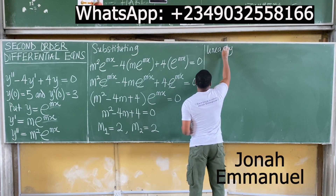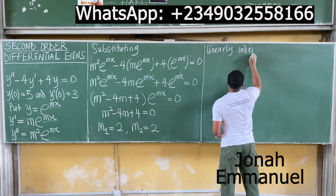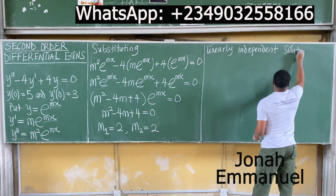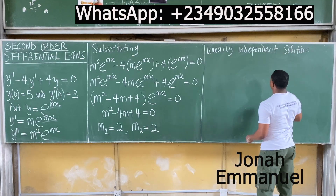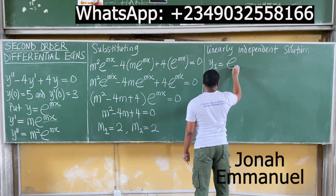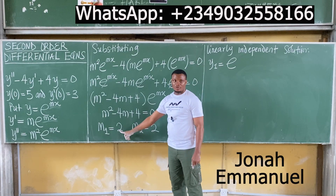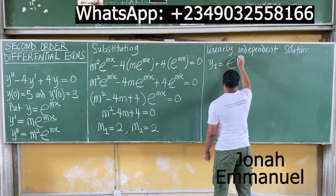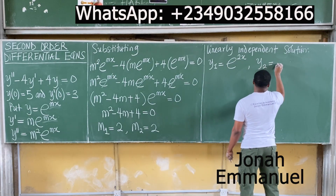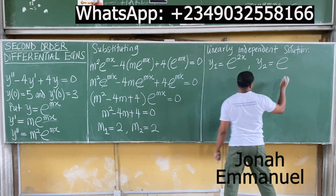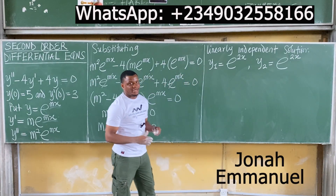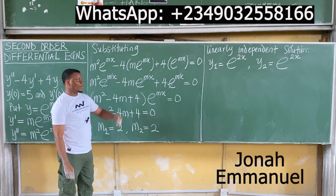Let's get the linearly independent solutions. The first solution is y1 equal to e^(m1·x), where m1 is 2, so y1 = e^(2x). And y2 = e^(m2·x), that's also e^(2x). This would always vary depending on the kind of root. When the root is repeated, this is what we have.